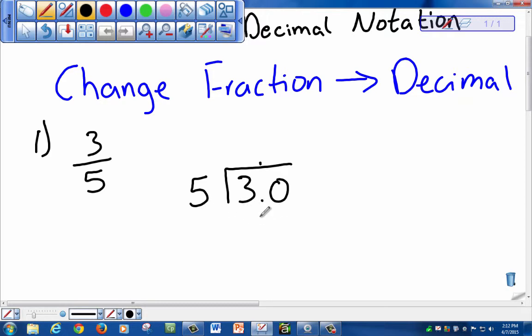5, how many times can it fit into 30? It could fit 6 times. So 6 times 5 equals 30. We subtract and our remainder equals 0. Our final answer will be 0.6. This is changing from a fraction to a decimal.